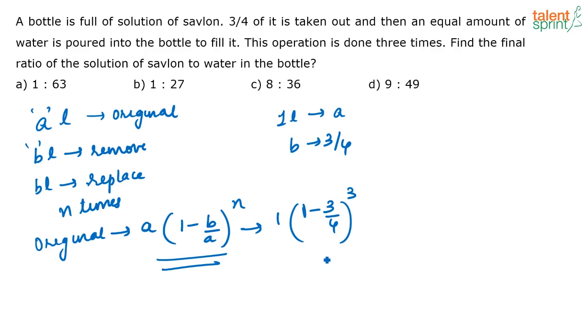Now how much water will be there in the final mixture? Total liquid in the bottle is 1 liter. So if 1 liter is there in the bottle, and this much is the Savlon, then the water is 1 minus (1 minus 3/4) whole cube. This is water in the final mixture. This is Savlon.